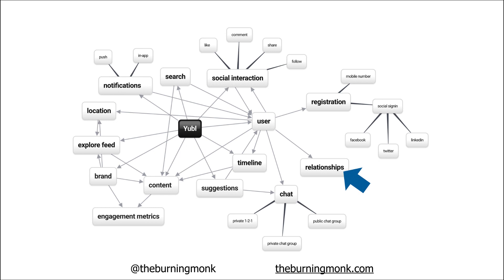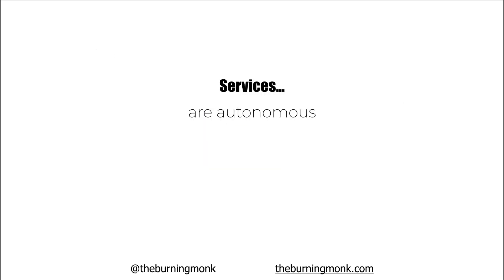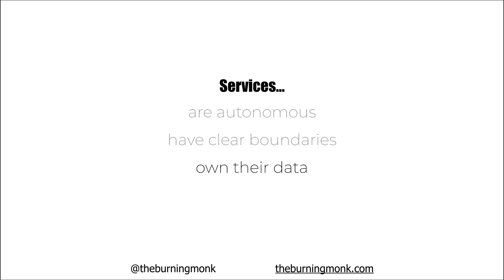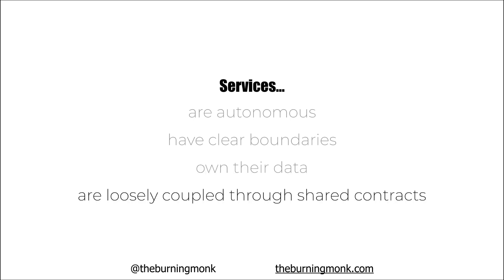Within those service boundaries you can use the most appropriate technology to implement those services. For example, to store relationships between users in a way that makes it easy to do complex queries like finding second or third degree connections, you may want to use a graph database such as Neo4j or Amazon Neptune. The important thing to keep in mind is that services should be autonomous, they should have clear boundaries to their responsibilities, and most importantly they should own the data they need to operate on. You don't want to share databases between different services, as you will create a single point of failure where if the database has an issue, all of your system goes down. Make sure your services are loosely coupled together through shared contracts, which can be applied to APIs as well as events and messages.